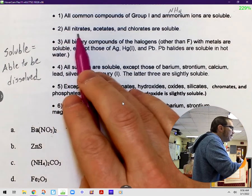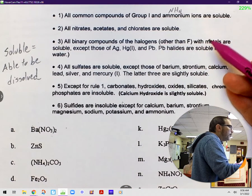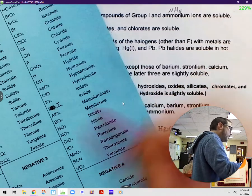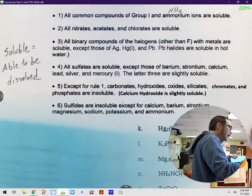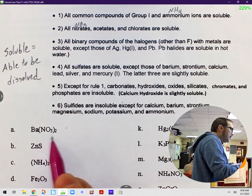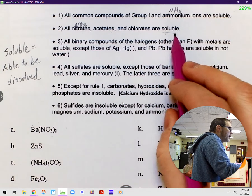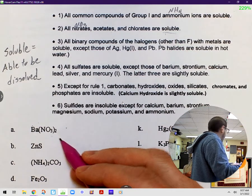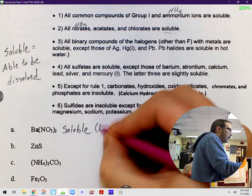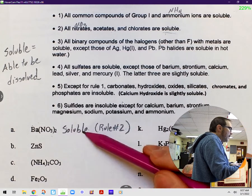Rule number two says all nitrates, acetates, and chlorates are soluble. So we're not sure what any of those are. We can look them up on our blue chart. What is nitrate? It's NO3, right? It's over here on the negative one column. So that's NO3. And actually, if you take a look at our sample, does that give us our answer? Yes. Because there's a nitrate right there. So all nitrates are soluble. So what I'm going to do is I'm going to come over to A, and I'm going to write soluble. And I'm going to also write rule number two, because rule number two is where I found the answer.